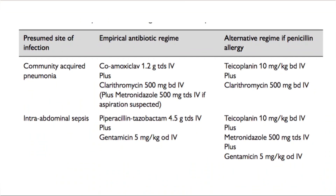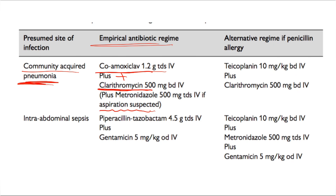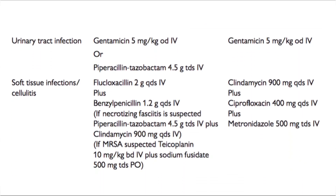For empirical antibiotic regimens before culture results return: for community-acquired pneumonia, give co-amoxiclav three times daily plus clarithromycin 500 mg twice daily, or azithromycin if unavailable. For suspected aspiration pneumonia, add metronidazole 500 mg three times daily to co-amoxiclav. For intra-abdominal sepsis, give piperacillin-tazobactam (Tazocin) 4.5g three times daily IV plus gentamicin 5 mg/kg IV. For urinary tract infection, gentamicin is first choice; if unavailable or resistance suspected, add piperacillin-tazobactam.